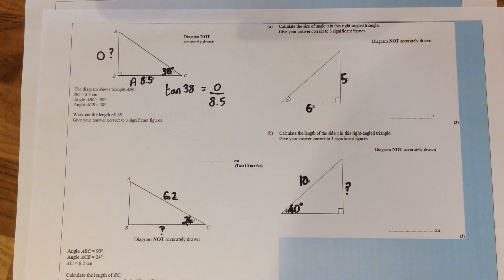All four of these questions are right angle triangles so we know that we're going to be using SOHCAHTOA for each of the questions.